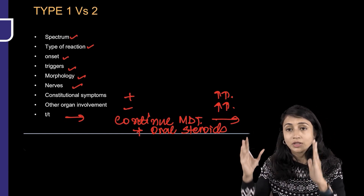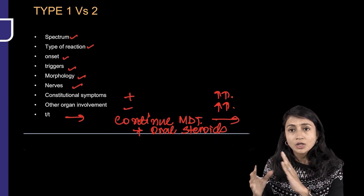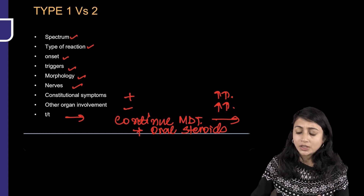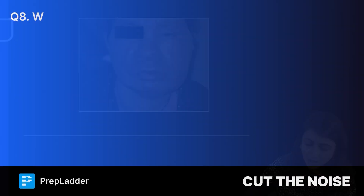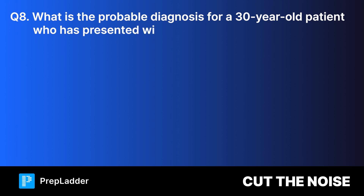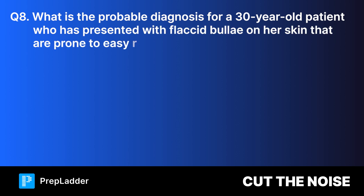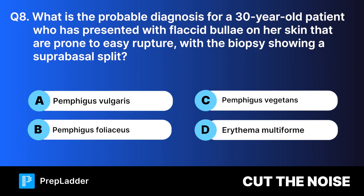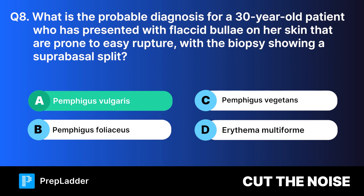Sometimes in the exam you are confused whether it is type 1 or type 2 reaction being shown. Don't worry — if they ask you the treatment, it is continue MDT and oral steroids. Question 8: What is the probable diagnosis for a 30-year-old patient with flaccid bullae on her skin prone to easy rupture, with biopsy showing a suprabasal split? The correct answer is pemphigus vulgaris.